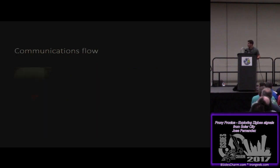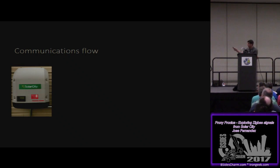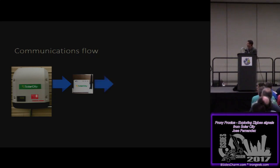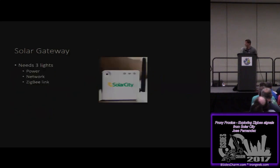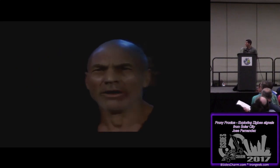The communications flow between the devices: the power inverter — a Fronius Primo model — has an antenna at the bottom. It communicates to the internet gateway, which is a small device that also has an antenna. That talks to your LAN, which talks out to the internet. It's not immediately clear just by looking at these things how the communication is happening. The solar gateway needs three lights to function properly: one for power, one for the network link on your LAN, and one for the Zigbee link.